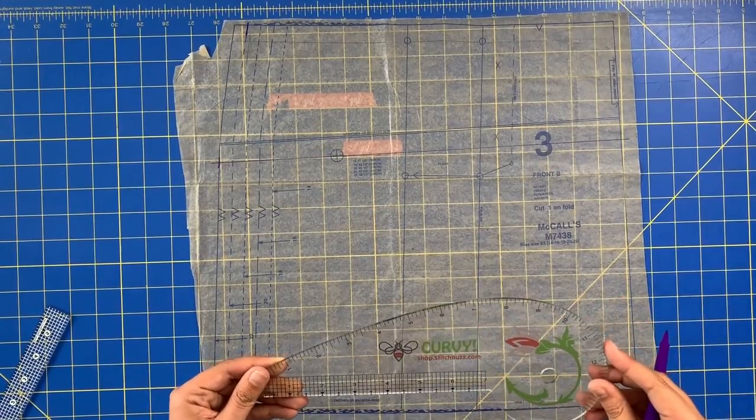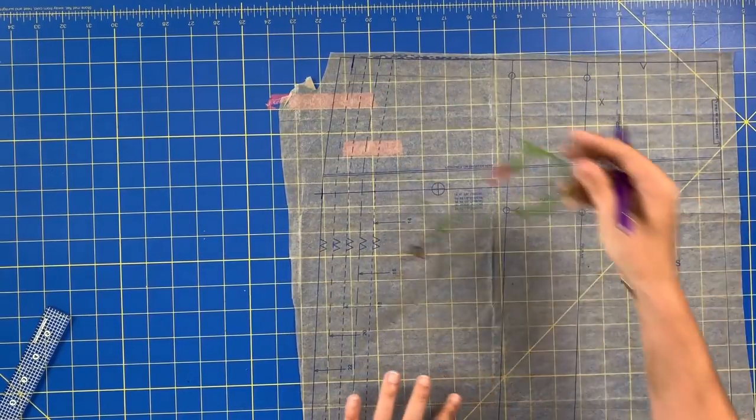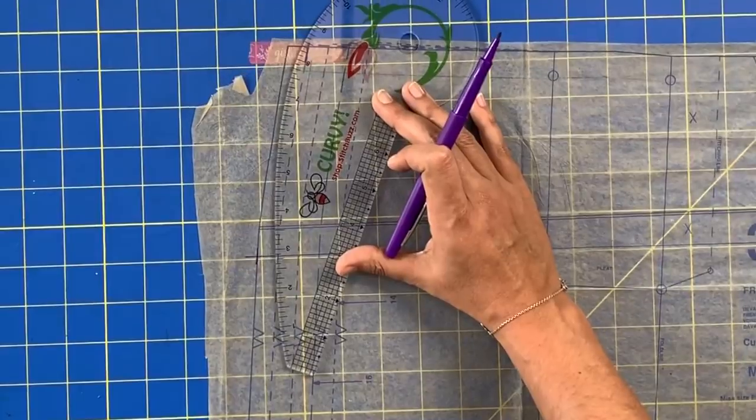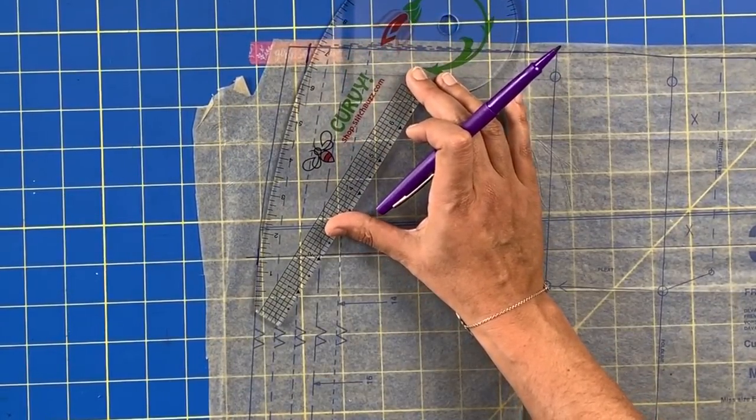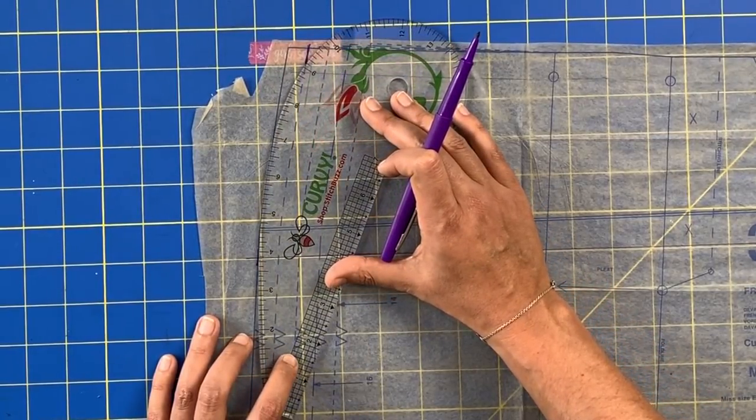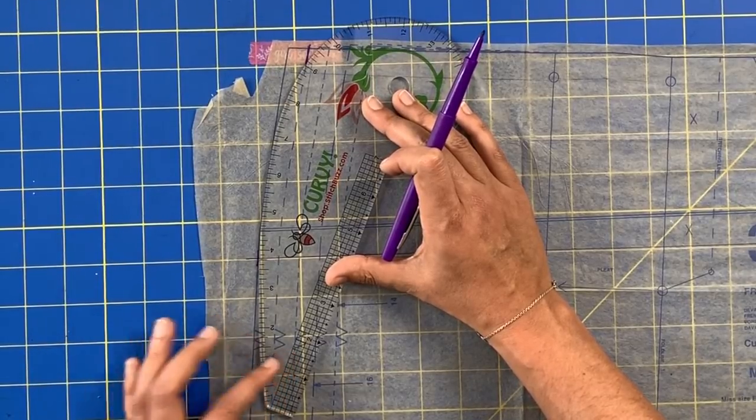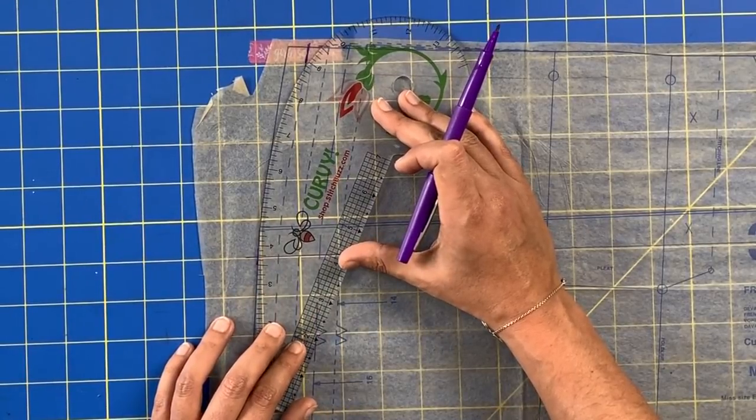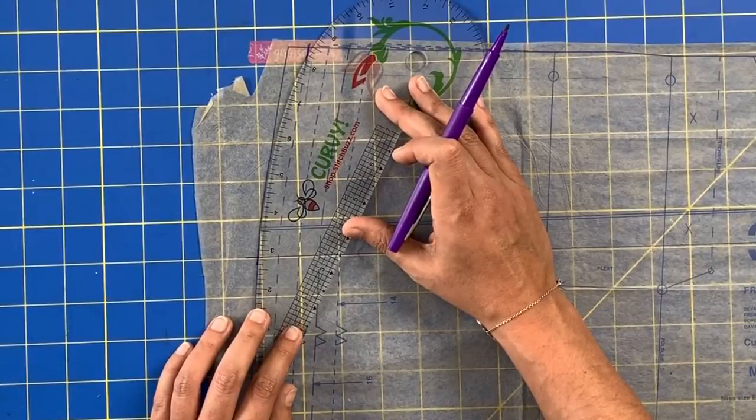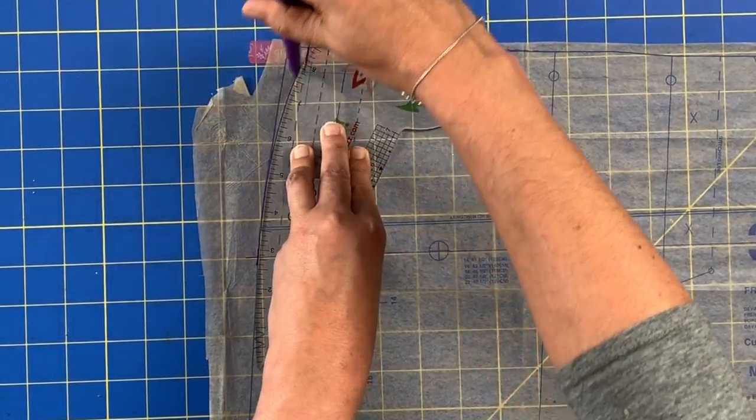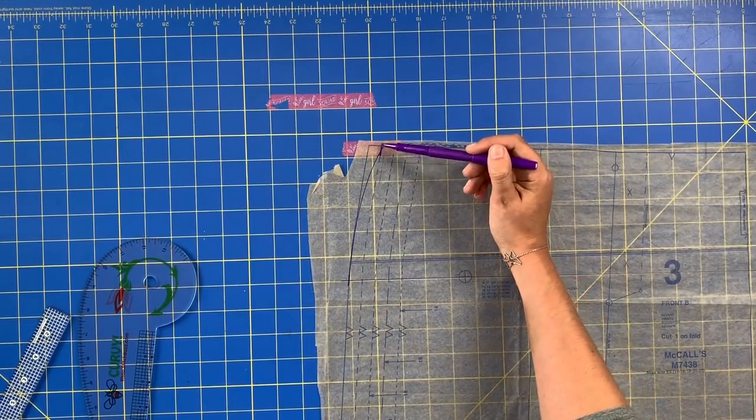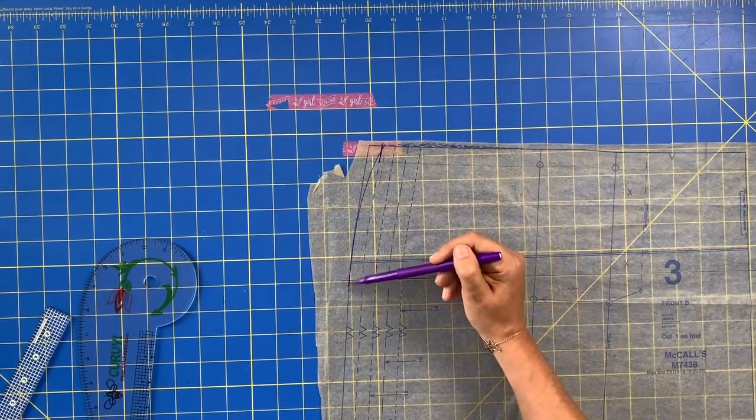Take a curvy ruler like the one from Stitch Buzz, and easily grade between those two sizes. Simply take the ruler and follow it around its curve. The curve gets more and more deep the more you go around. Follow it until those two points line up. It's going to follow the curve of the original pattern and dip in ever so slightly along the line. When you cut out your pattern piece, you'll have a size 20 at your waist and a size 22 at your hip.